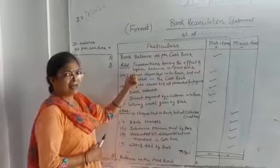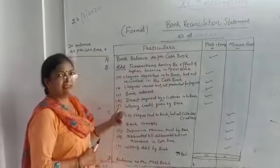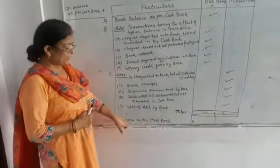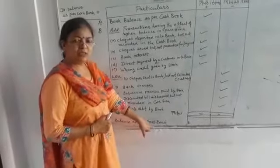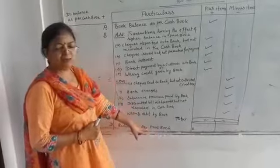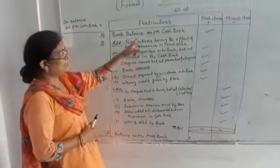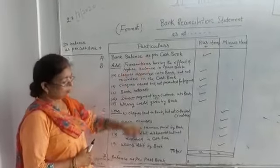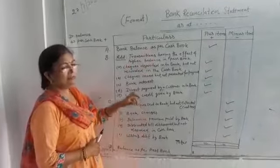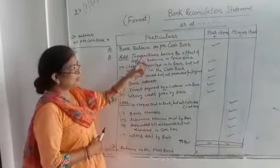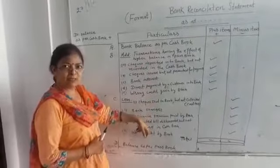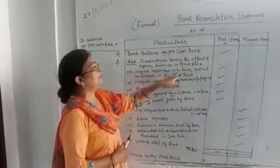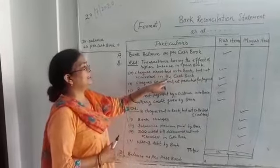Once you go to a Bank Reconciliation Statement, all the things to add in the Passbook you will have to look at from the Balance as per Cash Book. Balance as per Cash Book is our starting point. Because of all things that are added in the Passbook, the entry is not in the Cash Book. Check depositing into bank but not recorded in the cash book.